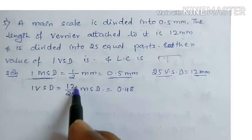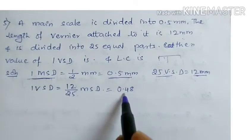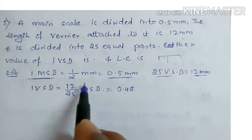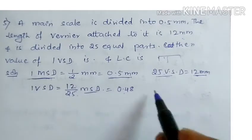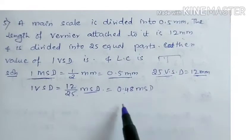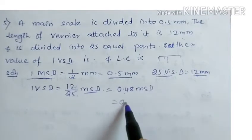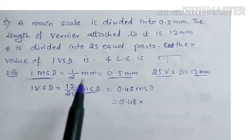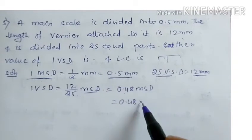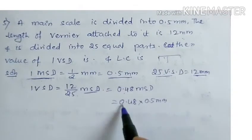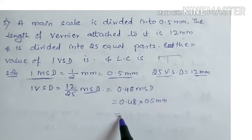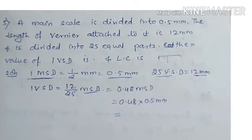3s are 36, 12, 4s are 48. So 48 by 100 is 0.48. This is 1 VSD. What is 1 MSD? 1 MSD is given as 0.5 mm. Multiply to get the final answer: 0.48.